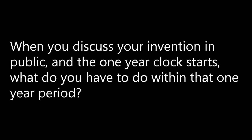When you discuss your invention in public and the one-year clock starts, what do you have to do within that one-year period? You have to file the patent within one year from the first disclosure. Also, if you file a provisional patent application, you have one year from that original filing to file a non-provisional application covering that same invention.